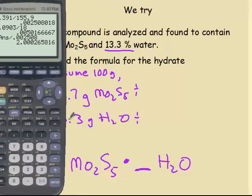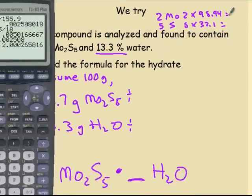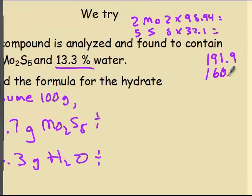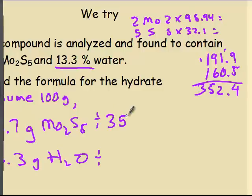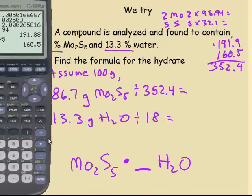I need to change this to moles. So I have to find the molar mass of molybdenum 2 sulfide. I have two MOs, 2 times the mass of MO, 5 times the mass of S. Molybdenum is 95.94. So 2 times 95.94, I get 191.88, let's go 191.9. 5 times 32.1, I get 160.5. Add them up, and I get 352.4. So 352.4 is the molar mass of the molybdenum compound, 18 for water.